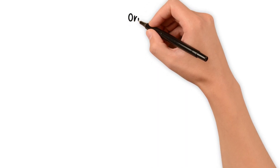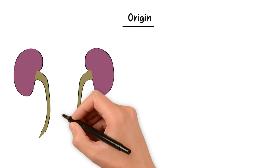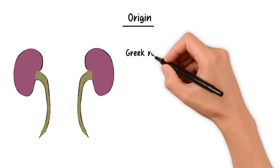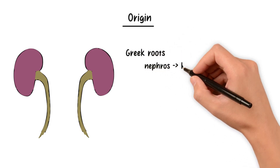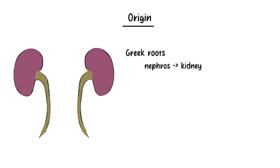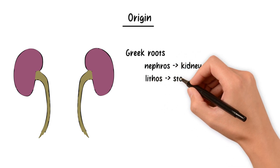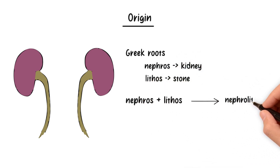Have you ever wondered where the term kidney stones comes from? To understand, we must travel back in time to ancient Greece. The Greeks had a word, nephros, which means kidney, and another word, lithos, which translates to stone. Combine them, and you get nephrolithiasis — the medical term for kidney stones.